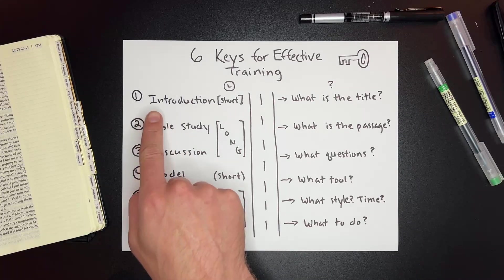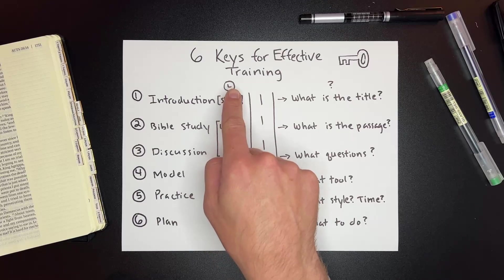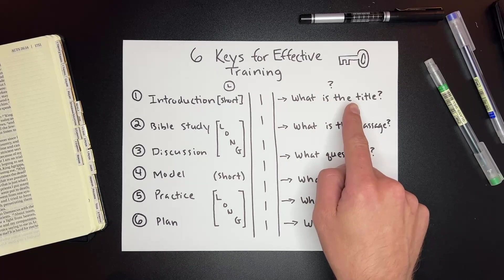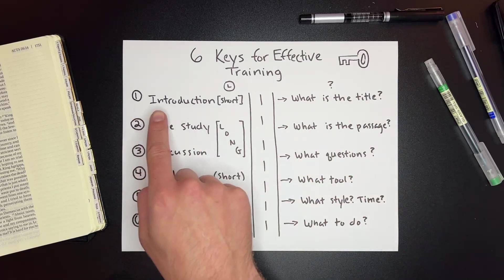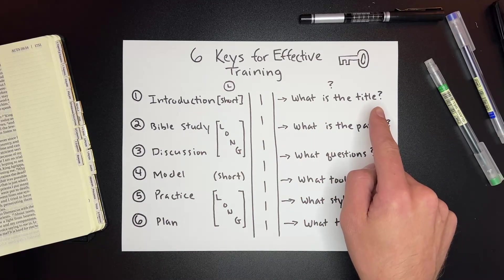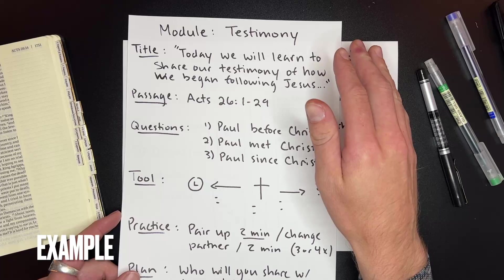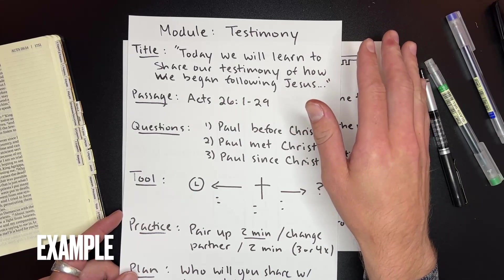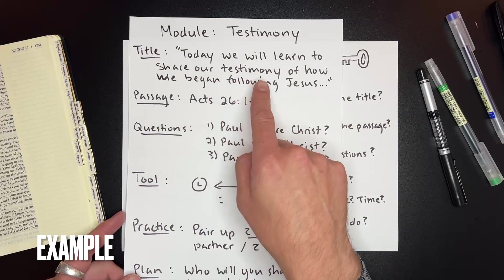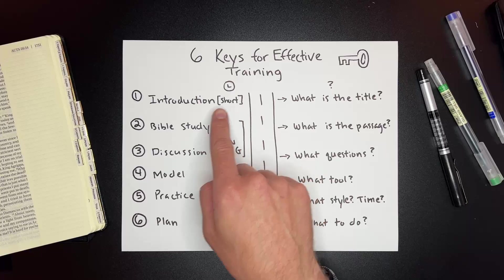The first is the introduction. When you get up to train any tool, you want to have a very short introduction — this is the timeframe in which it is trained. There is also a question for each of these to help you develop a module. So if I'm going to train people in how to share their testimony, the first thing I might say is: 'Today we will learn how to share our testimony of how we began following Jesus.' Very brief — that's the introduction.